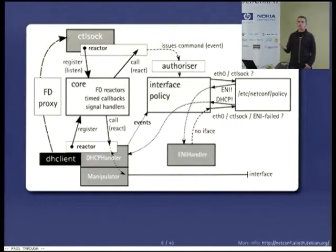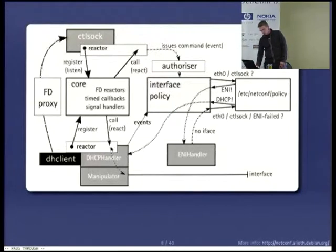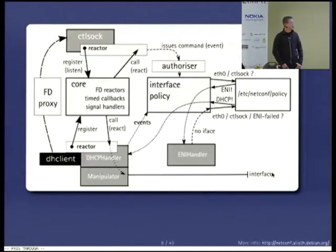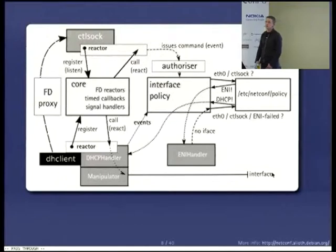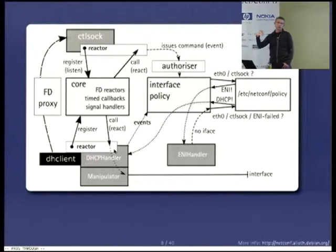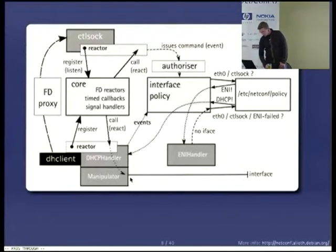Let's assume we got a bound event back, meaning the DHCP server gave us a lease. In case of a bound event, the reactor passes all the data to a manipulator, and the manipulator is the one that touches the interface. The manipulator delegates to scripts on your filesystem — the reason for this is that it should be easy for any distribution and any operating system to make changes to how the interface is actually manipulated. So that's what's happening when you tell NetConf to do something.